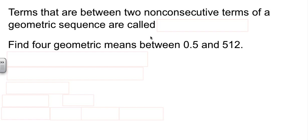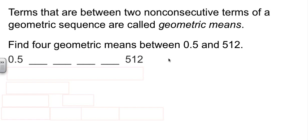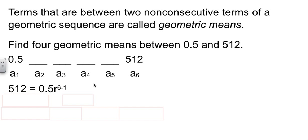Just like last time when we talked about arithmetic means, there's something called geometric means that are numbers between two values in the sequence. And we're going to approach it the same kind of way. They're going to give us two values, and they want us to find four means in between. So I've got this sequence where I started at 0.5, ended at 512, and I've got four blank values. Just like I did before, I'm going to number those off.